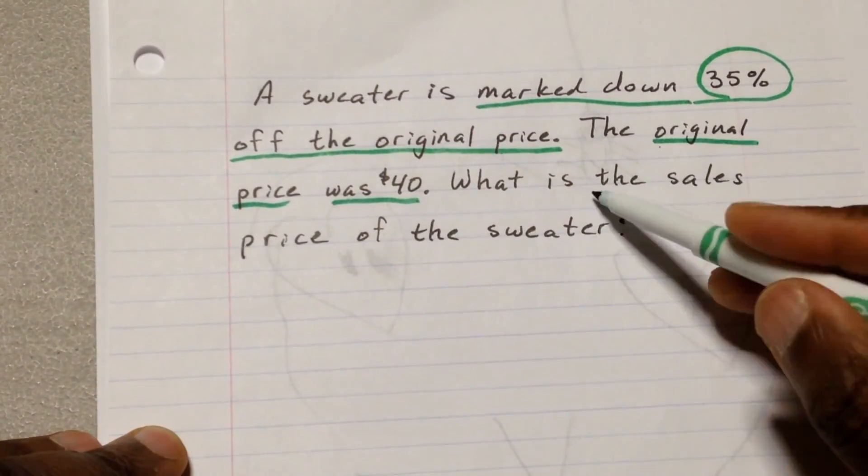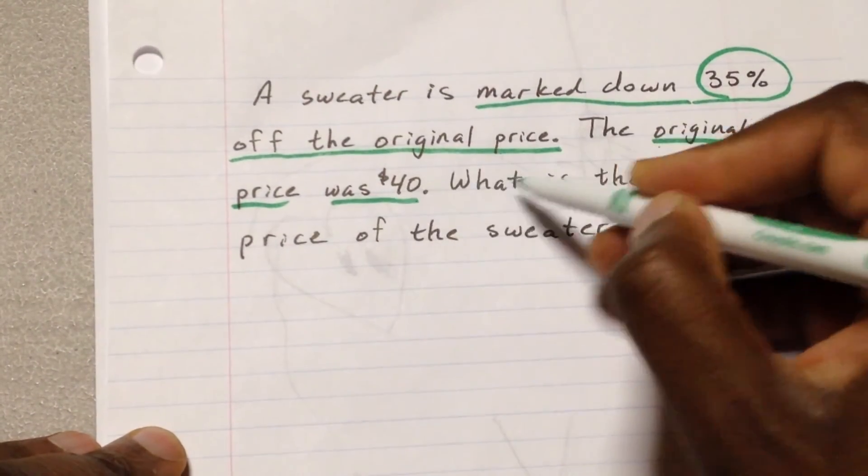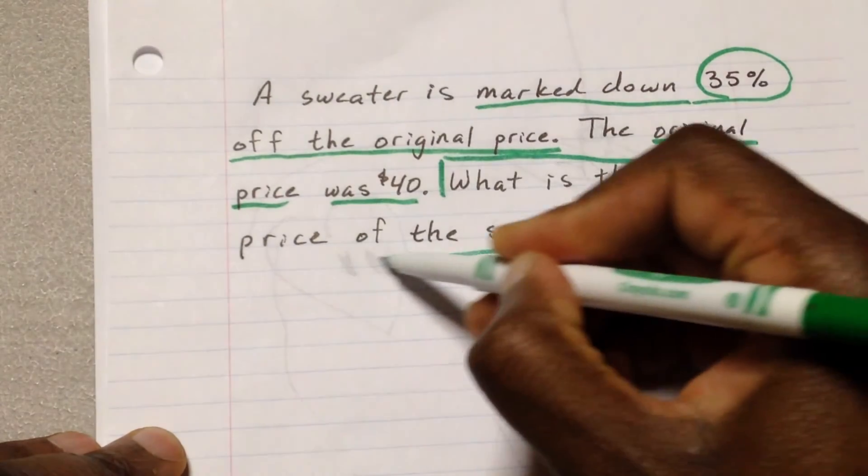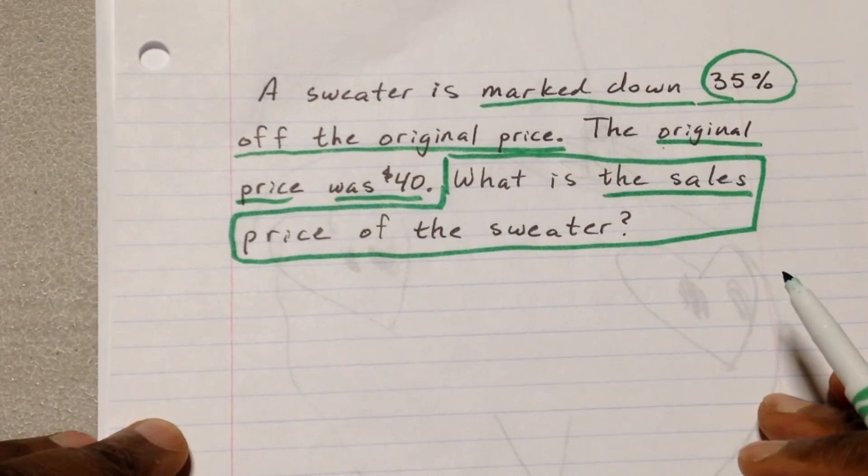Now, what do we have to find? What is the sales price of the sweater? What is the sales price? This is the information that we have to sell. Pretty much this whole thing here. What is the sales price of the sweater? Okay. So let's go at it again.